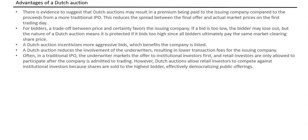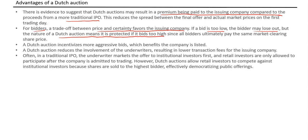Advantages of the Dutch auction method: First, there is evidence it may result in a premium paid to the issuing company compared to a traditional IPO, because investors want allocation and bid higher prices. Second, a trade-off between price and certainty favors the issuing company — if a bid is too low, the bidder may lose out, so bidders are incentivized to bid aggressively, benefiting the company. Third, the Dutch auction reduces underwriter involvement, as it is a natural price discovery process.